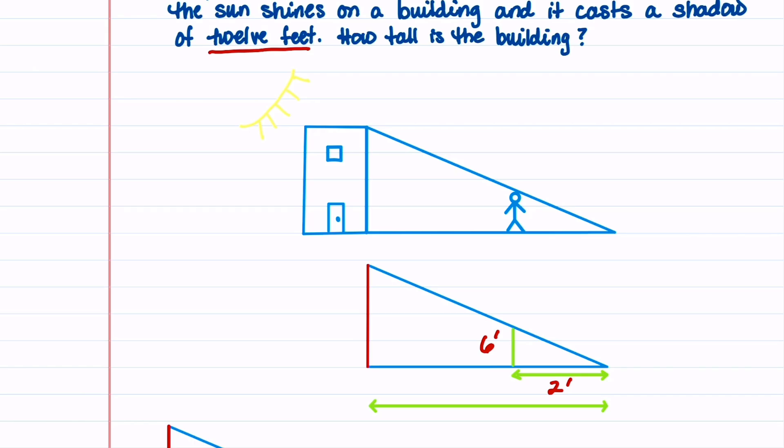The building is what we don't know. And we're going to notate that with the red. And let's label that as x because that's our unknown. And then the shadow that the building casts is 12 feet. So we can label that one.